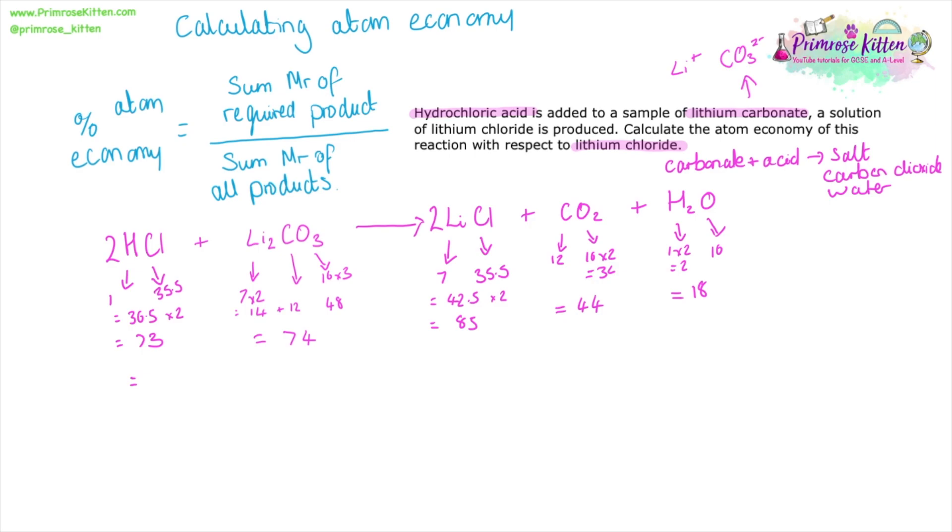Now, we can internally check our answers here because the mass on the left-hand side of the equation should equal the mass on the right-hand side of the equation. So I'm going to do this step. It is not necessary, but it is important. So 73 plus 74 gives us 147. 85 plus 44 plus 18 also gives us 147. So we know we've added up all of the masses correctly, and we know we've balanced our equation correctly.